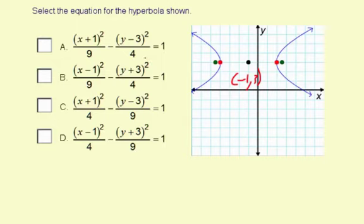We need x is negative 1. This is x is positive 1, x is positive 1. Okay, the two remaining are x is negative 1.